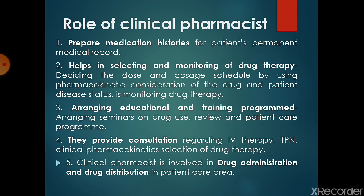Now, what should be the role of the clinical pharmacist during drug therapy for the patient? First, prepare medication history for the patient's permanent medical record. Second, it helps in selecting and monitoring of drug therapy — deciding the dose and dosage schedule by using pharmacokinetic considerations of the drug and patient disease status. Third, arranging educational and training programs, and being responsible for arranging seminars on drug use, review, and patient care programs. Fourth, they provide consultation regarding IV therapy, TPN, and clinical pharmacokinetic selection of drug therapy.